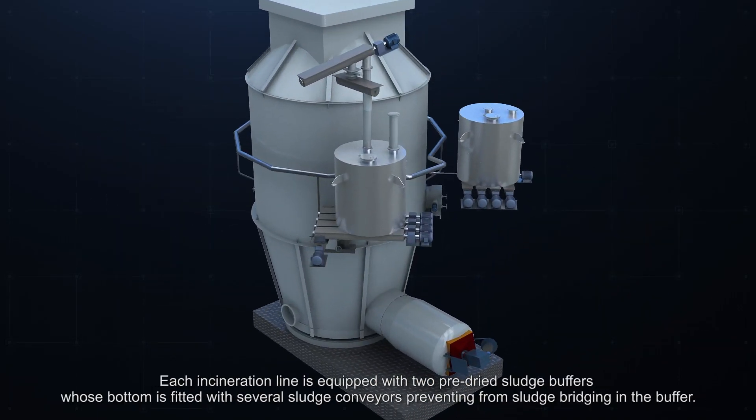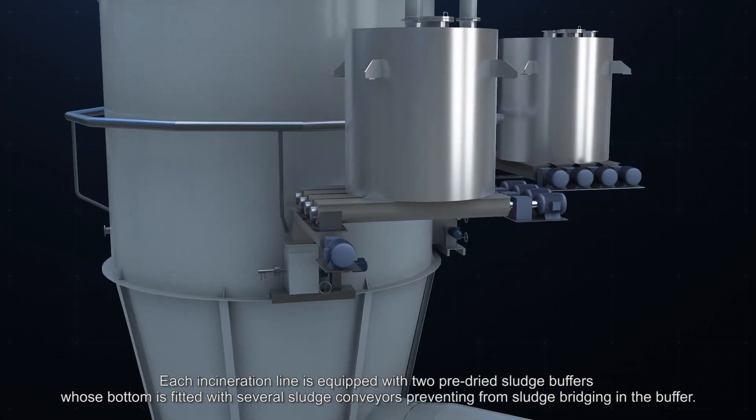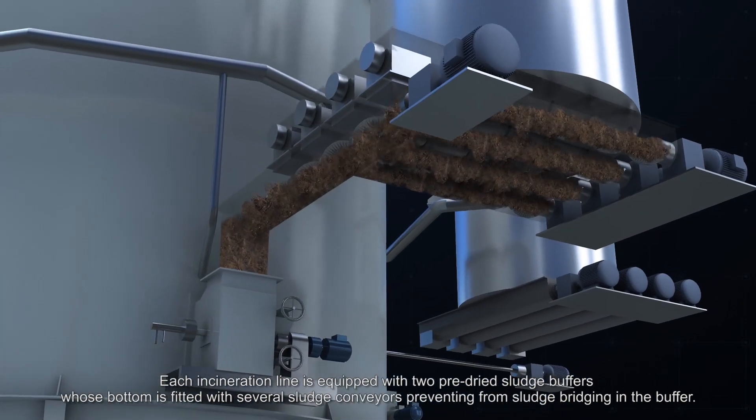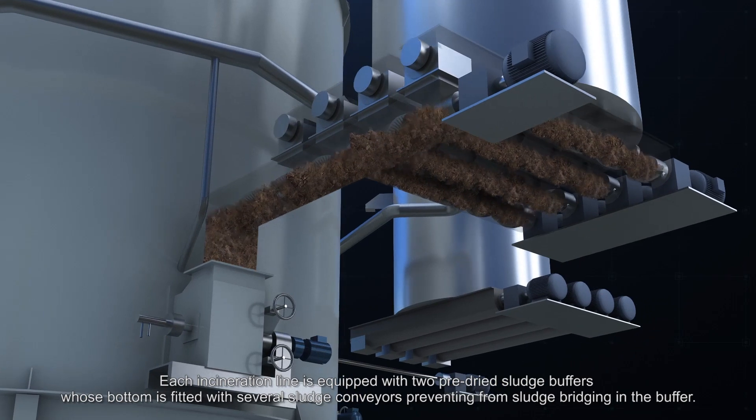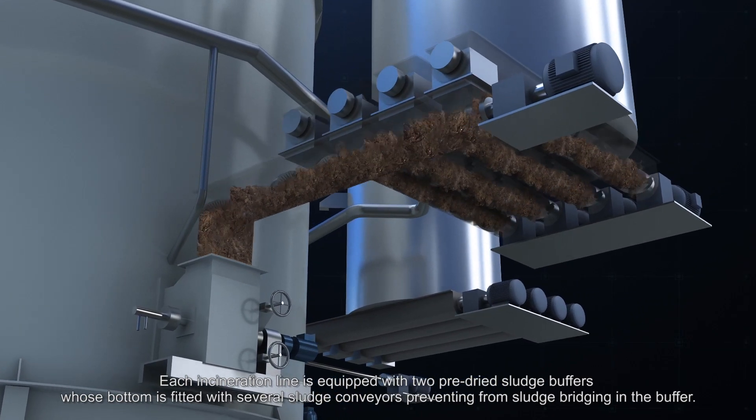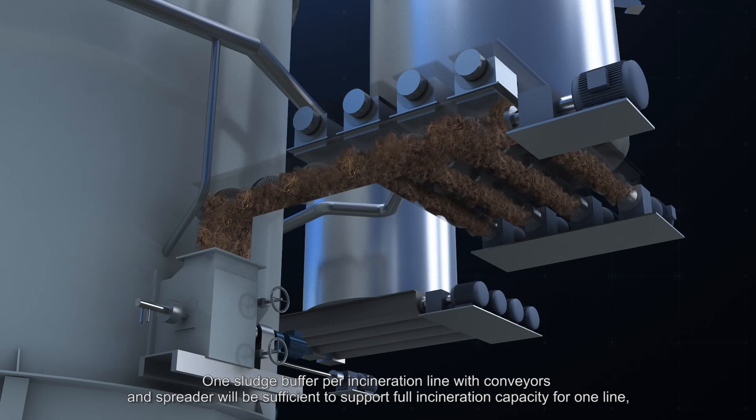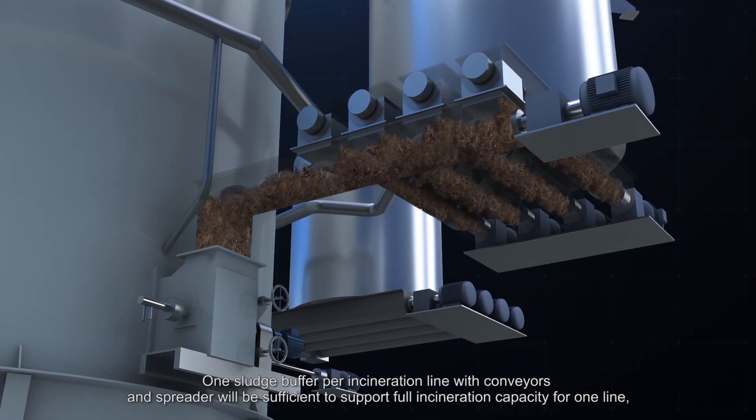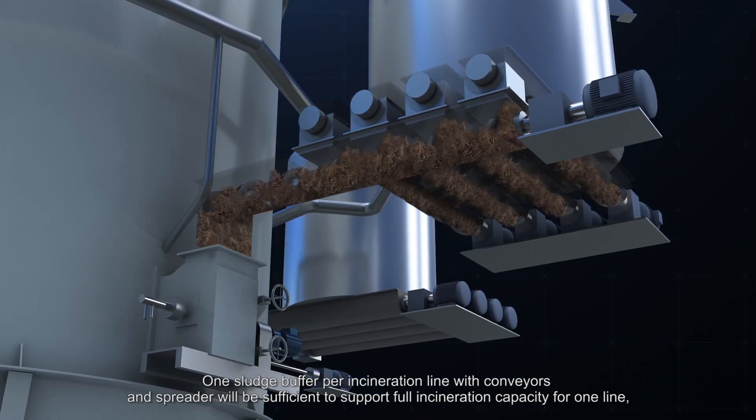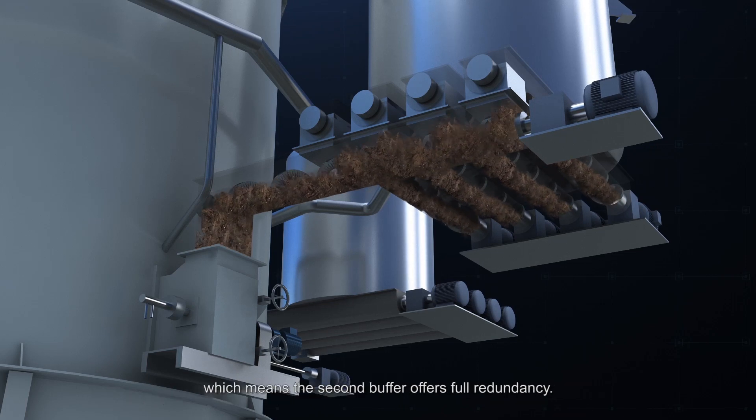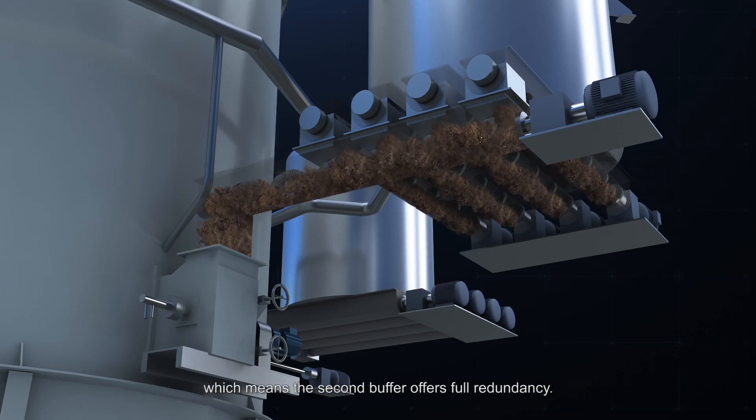Each incineration line is equipped with two pre-dried sludge buffers, whose bottom is fitted with several sludge conveyors preventing from sludge bridging in the buffer. One sludge buffer per incineration line with conveyors and spreader will be sufficient to support full incineration capacity for one line, which means the second buffer offers full redundancy.